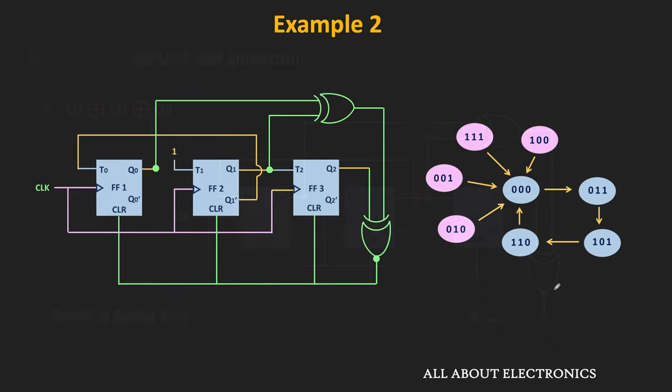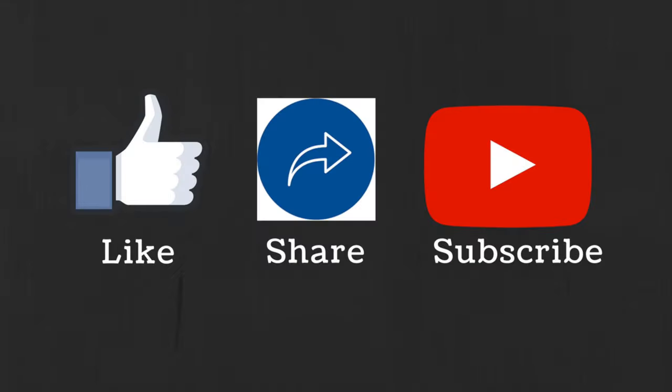This modified counter circuit eliminates the lockout condition. The modified state diagram shows that when the counter enters any invalid state, it immediately resets to 0. In this way, we can eliminate the lockout condition. Through these two examples, we have seen how to design synchronous counters that count in a specific sequence. If you have any questions or suggestions, let me know in the comment section. If you liked this video, hit the like button and subscribe for more.